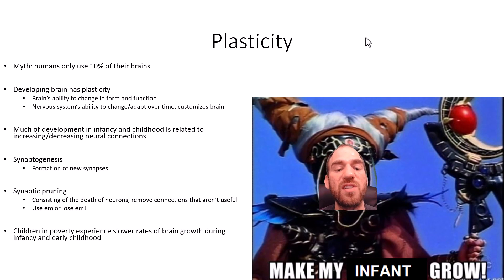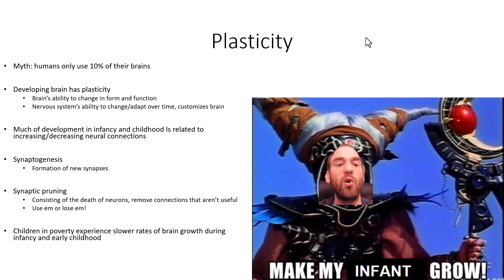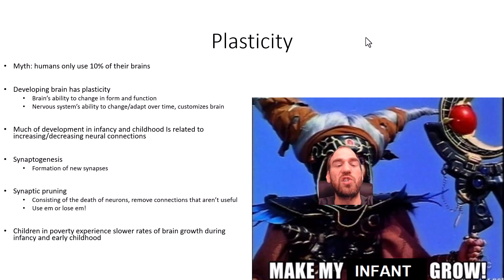Children in poverty experience lower rates of brain growth during infancy and early childhood. Our environments — parents, cultural values, society's rules and norms — shape the form and function of our brain, which can be good or bad depending on the environment. Ultimately, this adaptation exists to help us survive within our given environment; that's the evolutionary purpose.